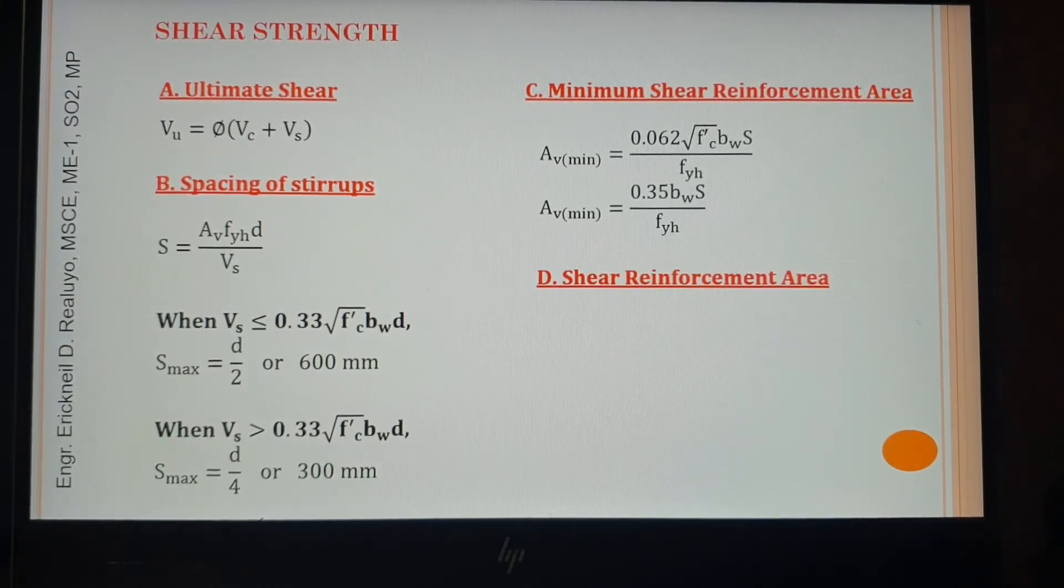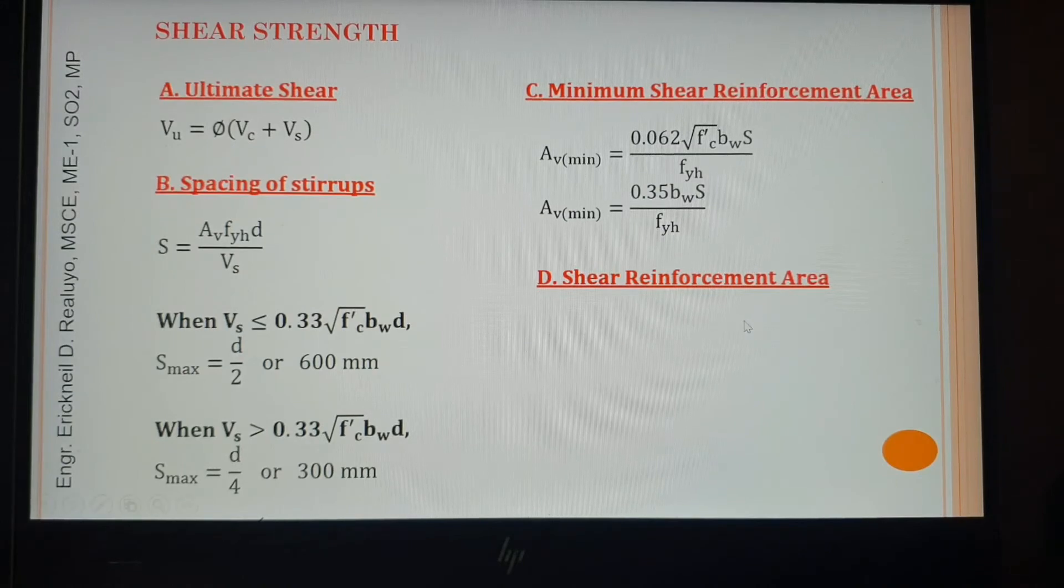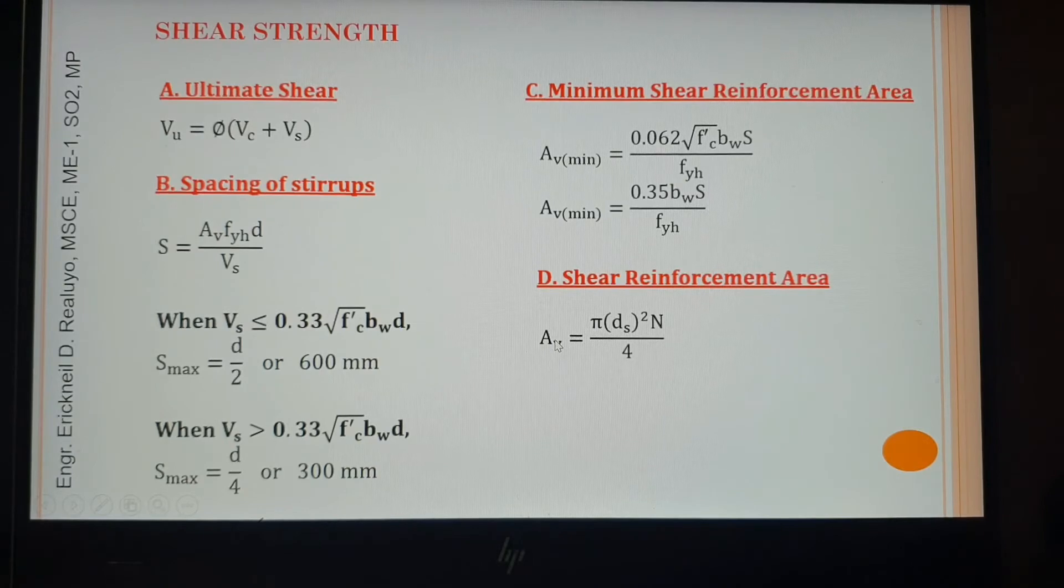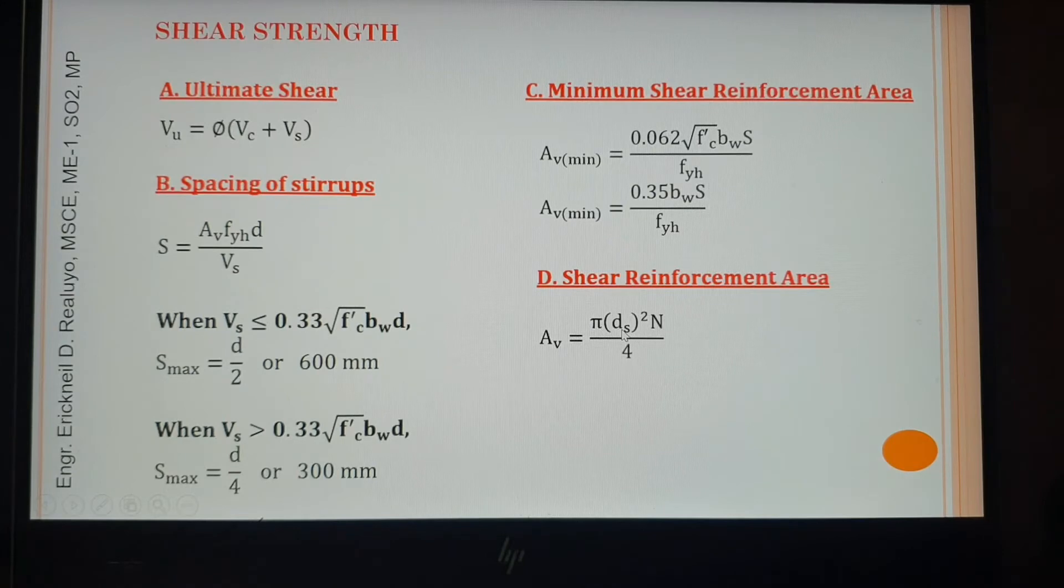For letter D, the shear reinforcement area, this is the formula. Av is the notation for the shear reinforcement area. This Av is being computed with this formula: pi over 4 times diameter of shear reinforcement squared. This is just like computing area of circle. Well, the cross-sectional area of bars is circle, then times this N. So we should know what this N is.